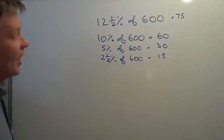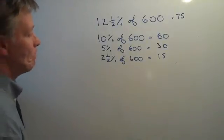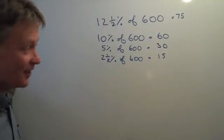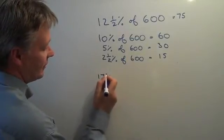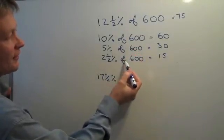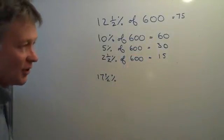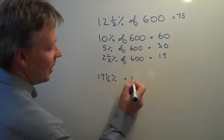We could also calculate 17.5%. 17.5% will be the sum total of these, which is 60 plus 30, which is 90, plus 15, which is 105.